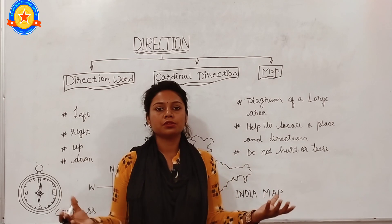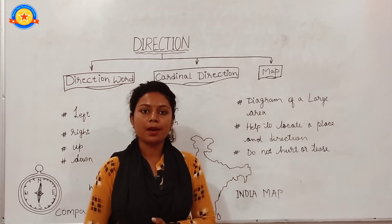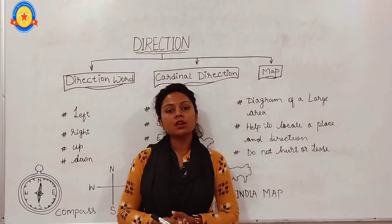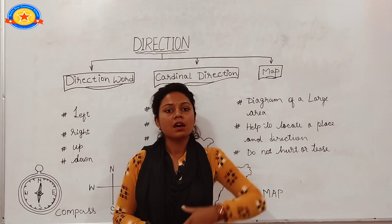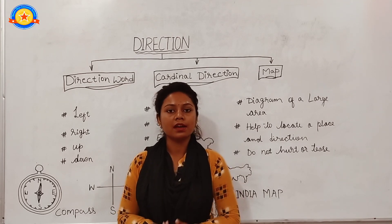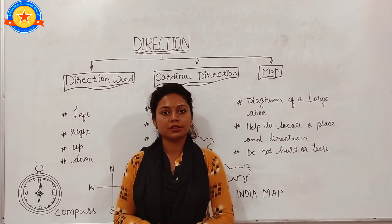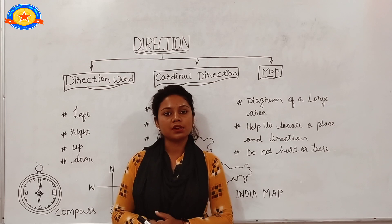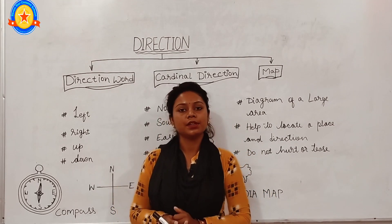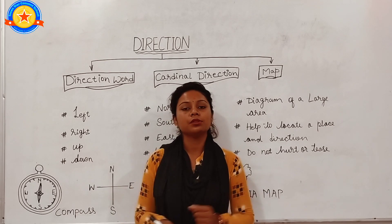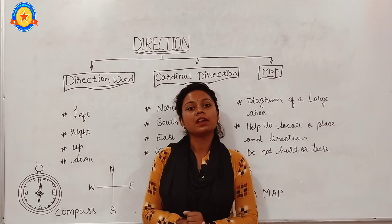This map is very helpful for finding a particular place. The topmost part of the map is north, the bottom is south, the right side is east, and the left side is west. The book of maps is called an Atlas.